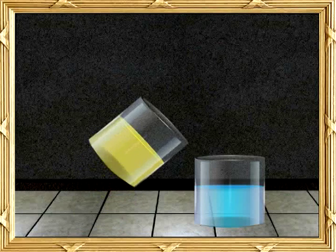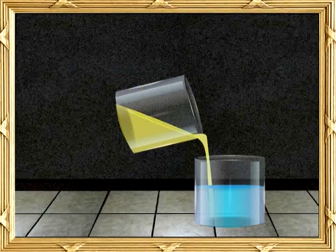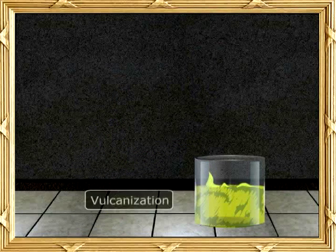Sulphur is used for the hardening of rubber. This process is called vulcanisation.